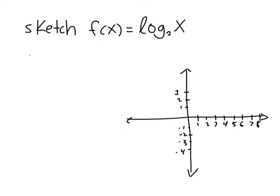We'll get started by plotting points. Let me write a table with x and the y-coordinate, which is log base 2 of x. Remember, logs are the exponent and the base is 2. So it might be easier to come up with the y values you want to plug in and then find the corresponding x values. If I plug in negative 3 for y, then x would be 2 to the negative 3, which is 1/8.